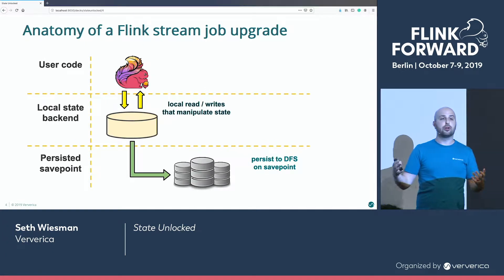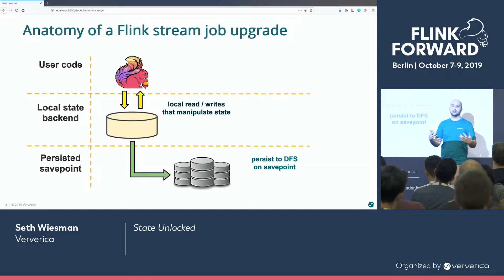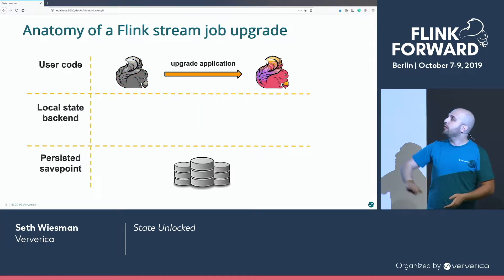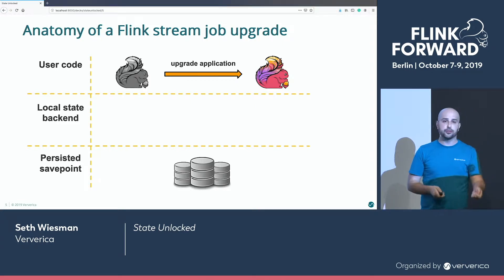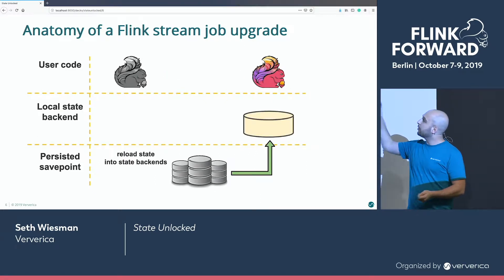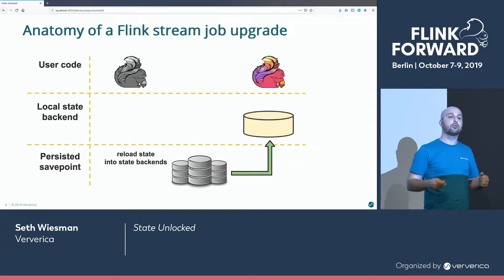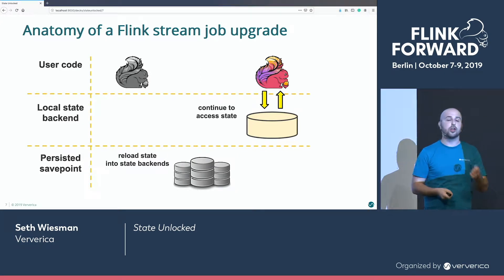So we'll start by taking a savepoint — a distributed snapshot of the global state of our application at a logical point in time — and copy that out to some distributed file system, somewhere where it's going to be available. Then we'll upgrade our application. We've made our code change: added a new operator, or changed a field. We want to restart. But we're not just going to run this code — we are going to reload our state into the state backends, make it local again, make it available. And then we'll start running and continue processing as if nothing had ever happened.